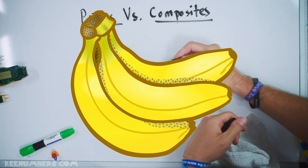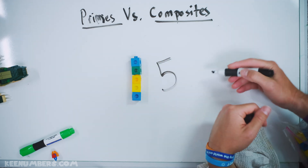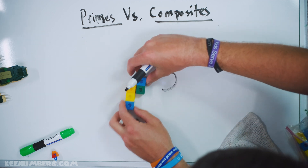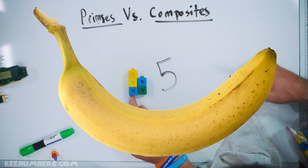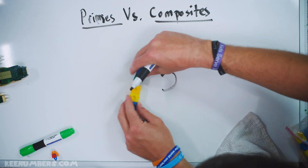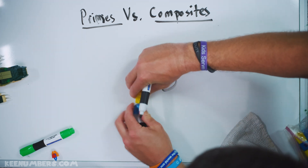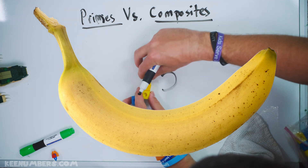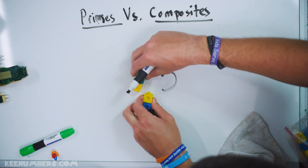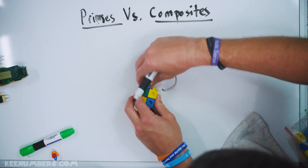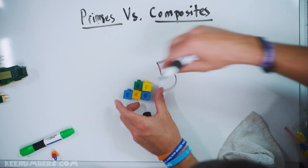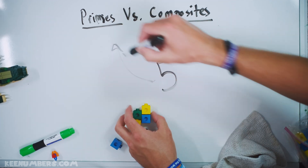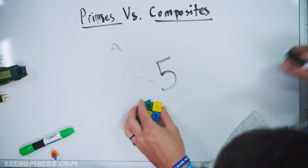What about 5? You can't make it into a nice rectangle. Look at that — that doesn't work, that's not a rectangle. And you can't do it like this either. That's not a rectangle. This is a prime number — you can't break it down anymore.